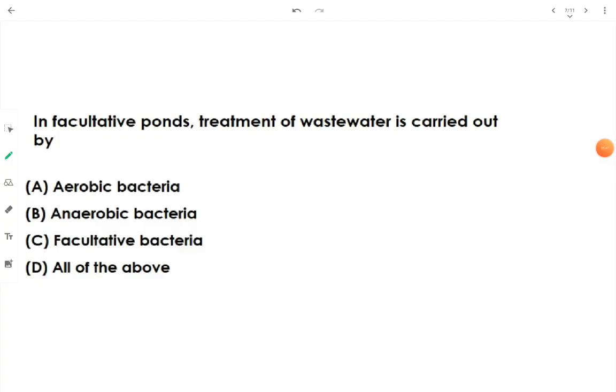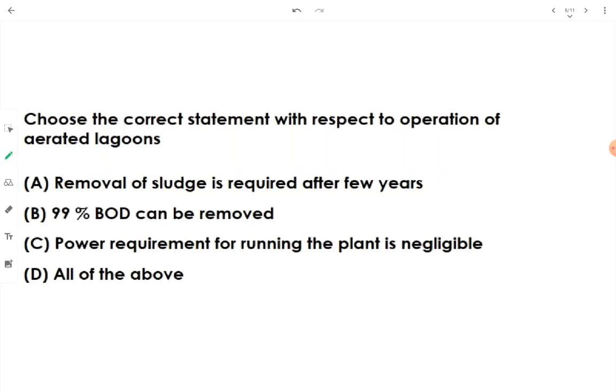In facultative pond, treatment of wastewater is carried out by all three types of bacteria: aerobic, anaerobic, as well as facultative bacteria. When the question mentions facultative pond, the maximum portion of treatment is given by facultative bacteria, but there also exist anaerobic as well as aerobic bacteria. That's why the answer is option D, all of the above.